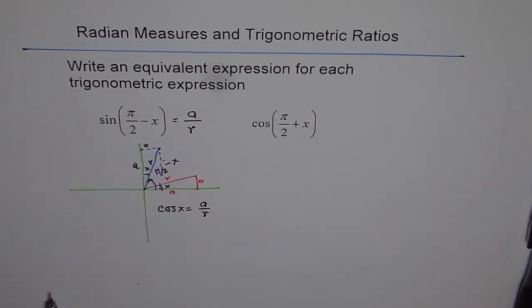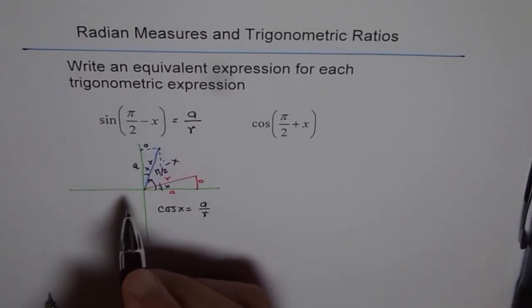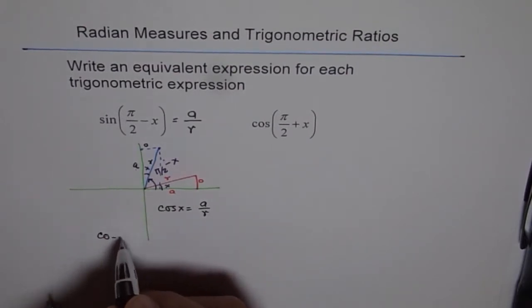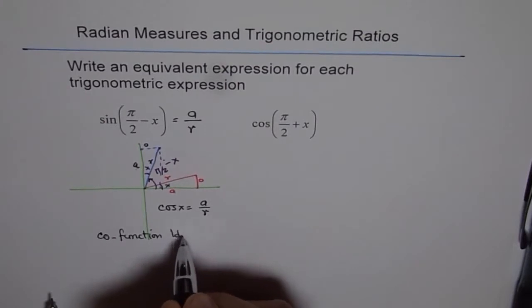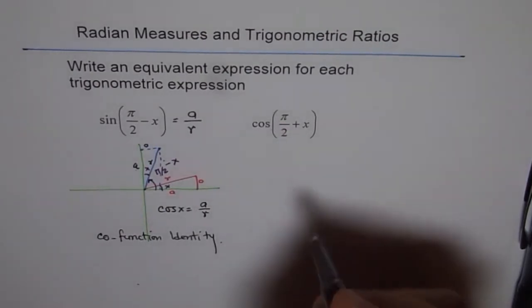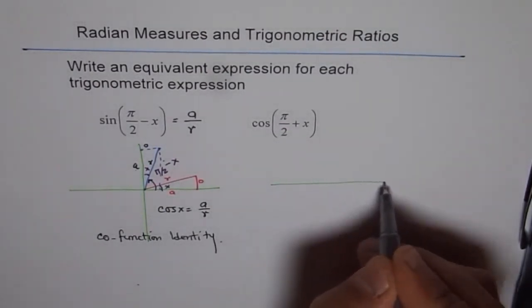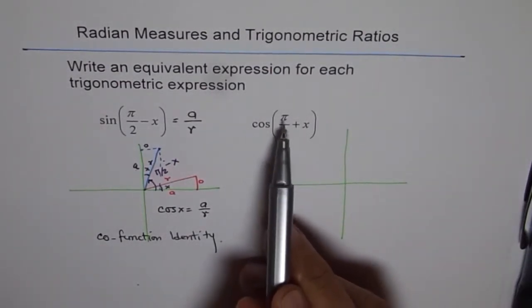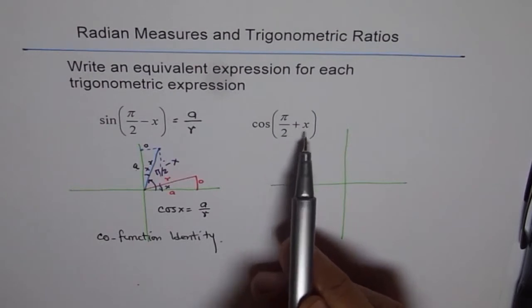So, cos of x is an equivalent expression to sine of π/2 minus x. And this identity is also called co-function identity because it converts sine into cos. These are co-functions. We call this co-function identity. Let's have a second look at it with the help of the other example.